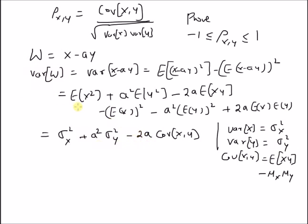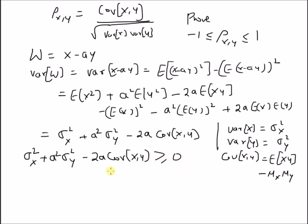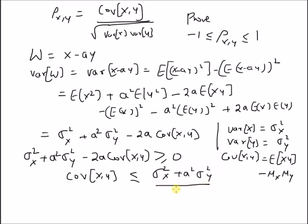Since the variance of any random variable is always non-negative, we can write that sigma squared x plus a squared sigma squared y minus two a times covariance of x and y is always greater than or equal to zero. By rearranging, covariance of x and y is always less than or equal to sigma squared x plus a squared sigma squared y divided by 2a.